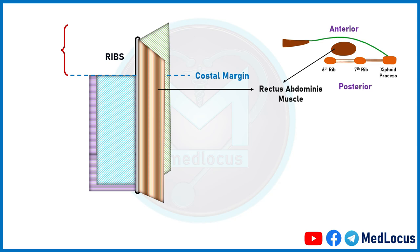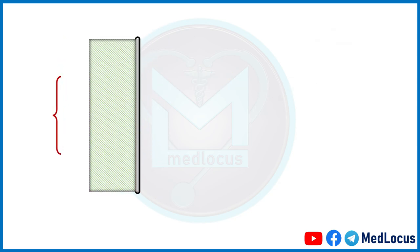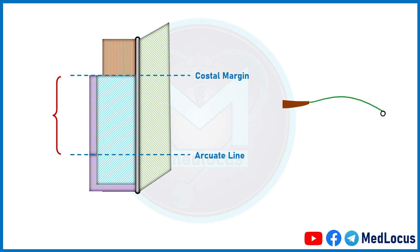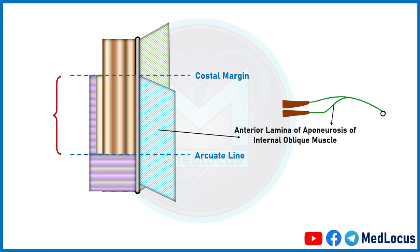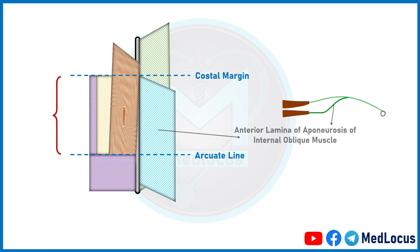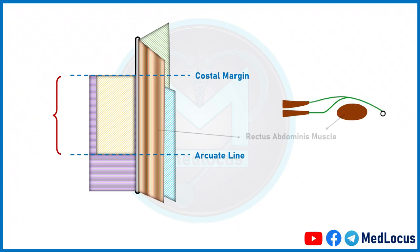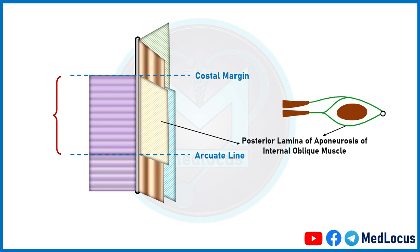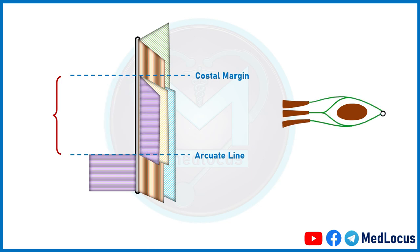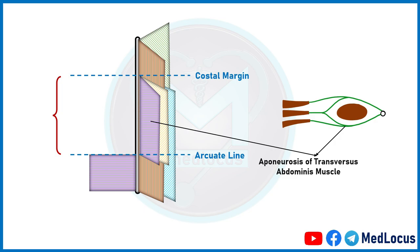Now we will talk about the formation of the rectus sheath between the costal margin and the arcuate line. The aponeurosis of the external oblique muscle is reflected and drawn, followed by the anterior lamina of the aponeurosis of the internal oblique muscle. The rectus abdominis muscle is then reflected and drawn, followed by the posterior lamina of the aponeurosis of the internal oblique muscle, and then the aponeurosis of the transversus abdominis muscle, seen posterior to it.